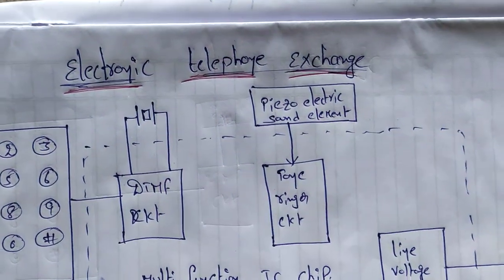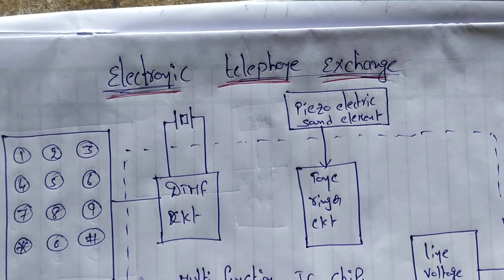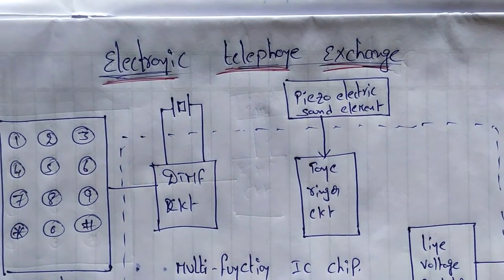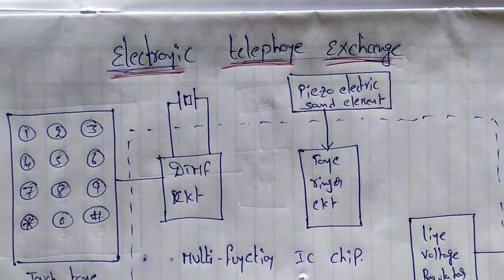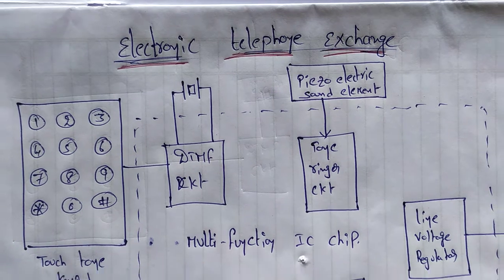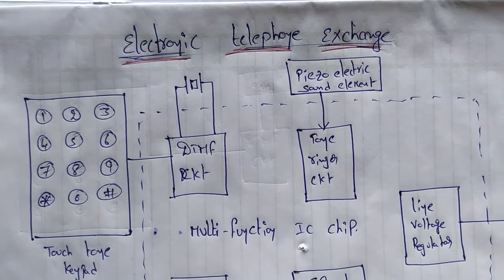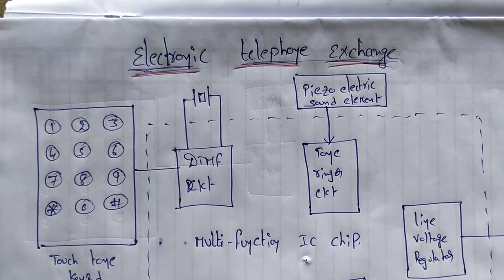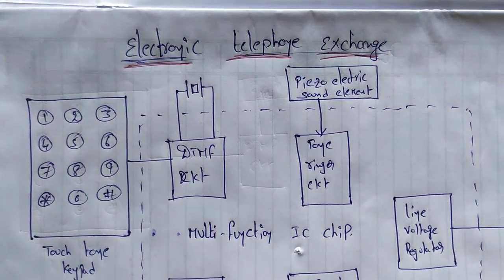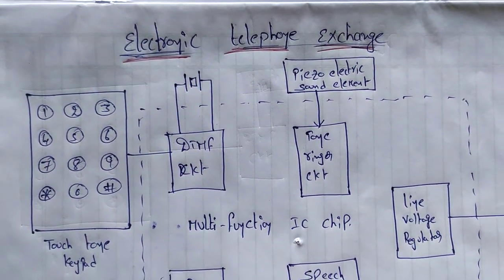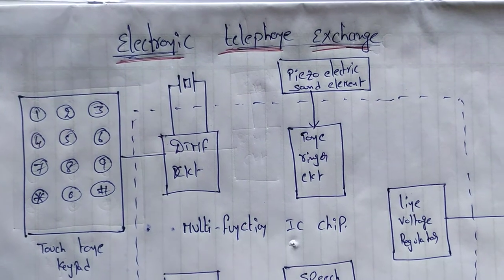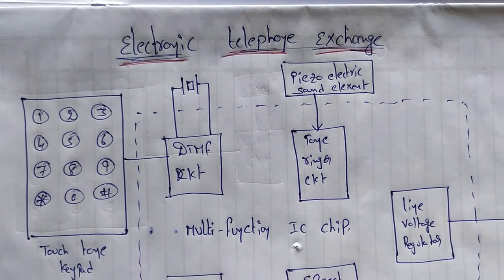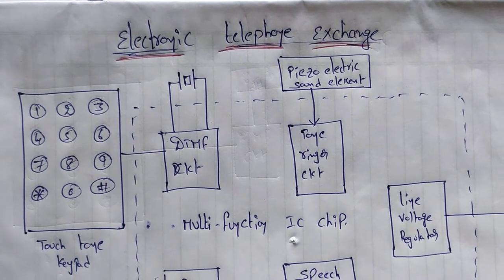If you want to skip the block diagram 2-3 times, you can use it as easily as you can. If you want to use a landline phone, you can use a chatron phone.